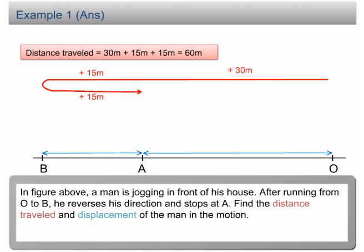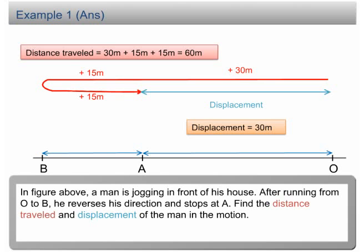The total distance traveled is 60m. Displacement is the shortest length between O and A, therefore the displacement is 30m.